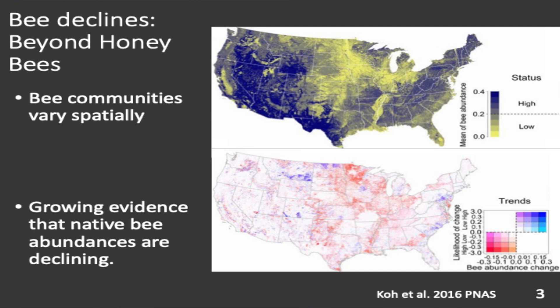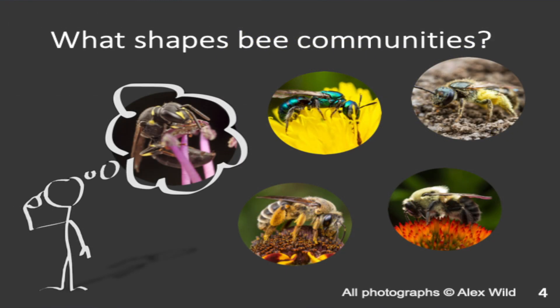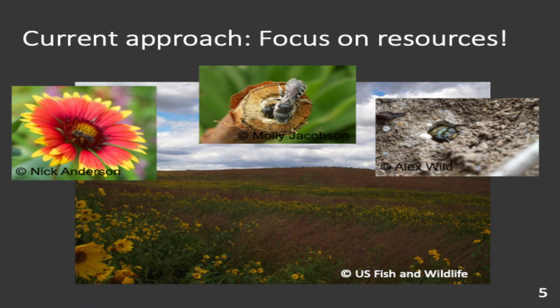There is lots of money being spent on how to conserve these species and restore habitats. In our lab we really focus on the idea of what shapes bee communities — we want to know where to spend our limited resources for conservation, and from a biological curiosity standpoint, what's causing certain species to be in different habitats and how we might improve those habitats.